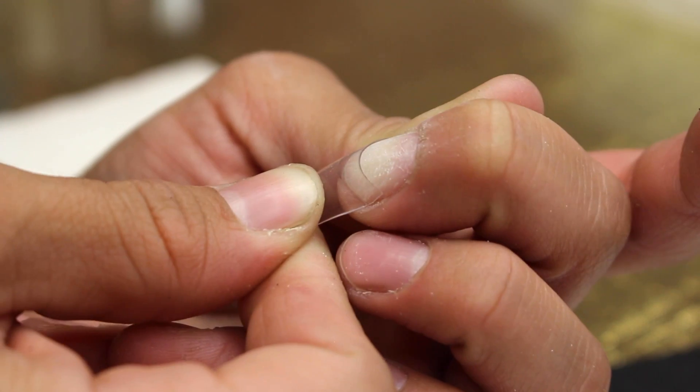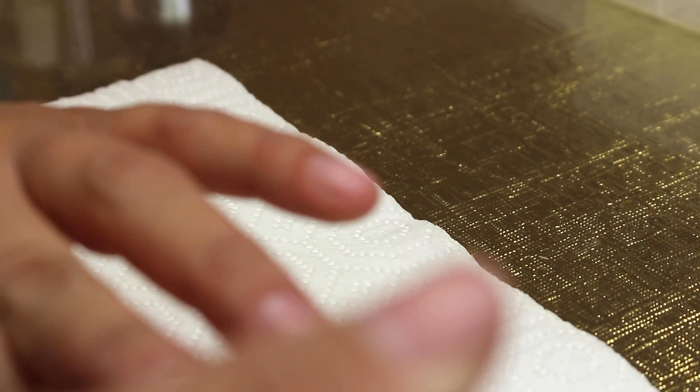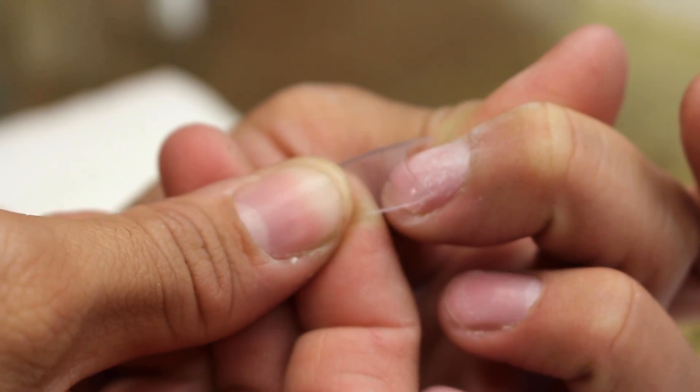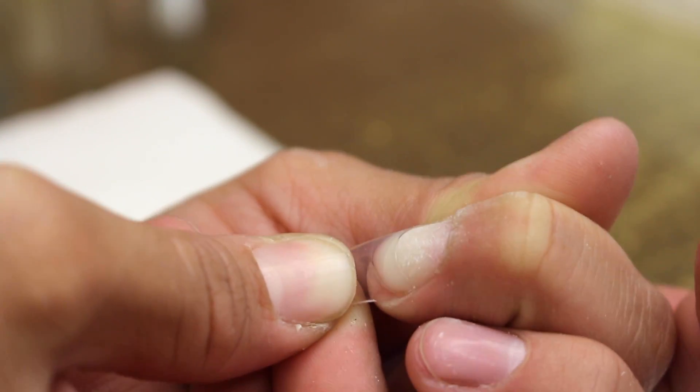And then we're going to be applying a drop of glue and adhering the fake nail to the natural nail. You just want to wiggle it on there and hold it down and press it until it dries so it's nice and secure.